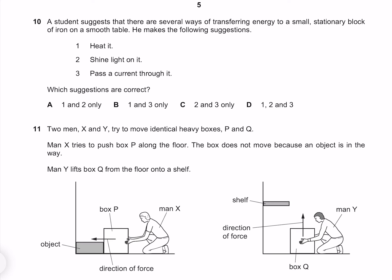A student suggests that there are several ways of transferring energy to a small stationary block of iron on a smooth table. He makes the following suggestions: Heat it, shine a light on it, and pass a current through it. Which suggestions are correct? Heating it is going to give it thermal energy, shining light on it will do the same, as will passing a current through it, and so it must be 1, 2, and 3.